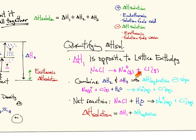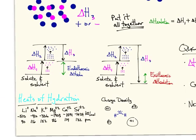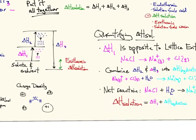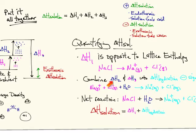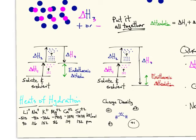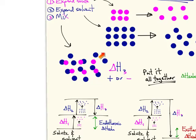We run into problems, however, when we start to quantify H2 and H3. The problem is I don't actually know how much of the solvent I need to expand in order for it to receive the solute, so it's hard to imagine an experiment where I quantify only a partial expansion of the solvent — H2 gives me problems. Similarly, H3 also gives me problems: it's hard to know exactly how much energy I'm getting back during this interaction, since I don't know if one solute particle is interacting with one, two, three, four, five, or six solvent molecules at any given moment.